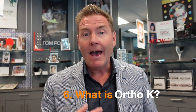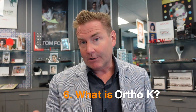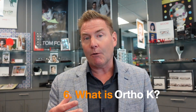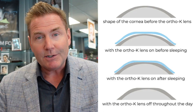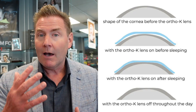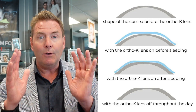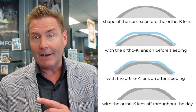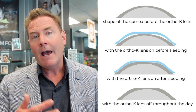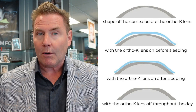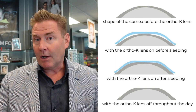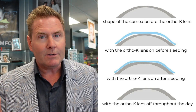Question number six: what is Ortho-K and how does it manage myopia? Ortho-K, also known as orthokeratology, uses a rigid gas permeable contact lens worn at night that reshapes the surface of the cornea to put things in focus on the back of the retina. In the morning you take the lens out and your cornea has been reshaped so you can see in the distance without glasses or contact lenses. The next night you put the lens back in. It can correct your myopia temporarily — it's not permanent — and studies show it also helps slow down the progression of myopia by about 50 to 60%.